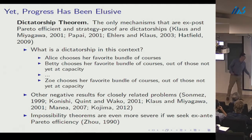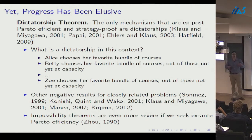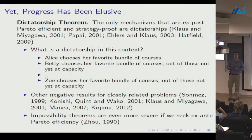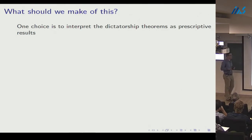The impossibility theorems are even more severe if we seek ex ante Pareto efficiency instead of ex post. Ex ante Pareto efficiency means: a lottery over allocations is ex ante Pareto efficient if there is no other lottery that all agents weakly prefer with at least one agent strictly preferring it. One choice is to interpret the dictatorship theorems as prescriptive results, but I disagree with that choice.